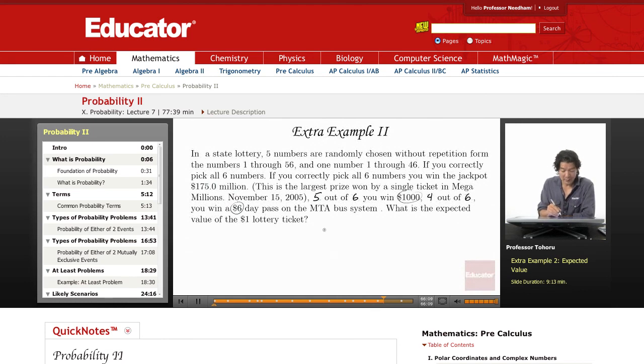The way we're going to figure that out - this is as much a combinations problem as it is an expected value problem. If we have 1 through 56, the number of possible combinations are 56 choose 5. And then there's an additional amount where we have 46 choose 1. If you want to get all 6 of them right, there is only one combination that works: 6 choose 6. That is the jackpot right there.